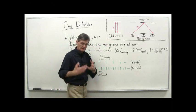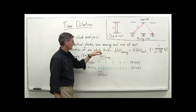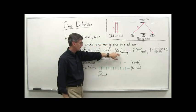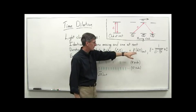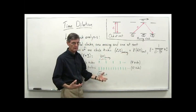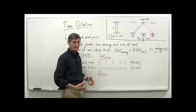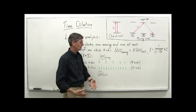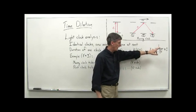Bob has his clock at rest, Alice has a moving clock. Bob is observing her moving clock, and our conclusion was that the duration of one clock tick — Bob observing Alice's moving clock — equals some factor gamma times one clock tick for his clock at rest, which is identical. And yet, by putting one clock into motion, all of a sudden from Bob's perspective, the clocks are running differently: the moving clock is running more slowly than his clock at rest.